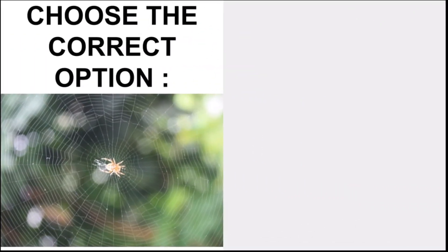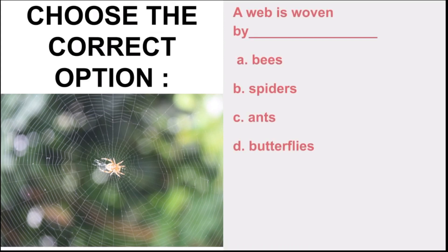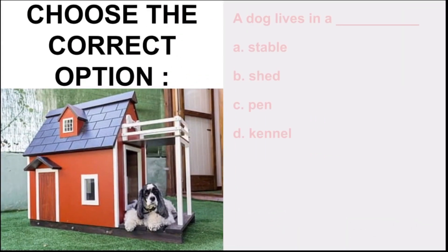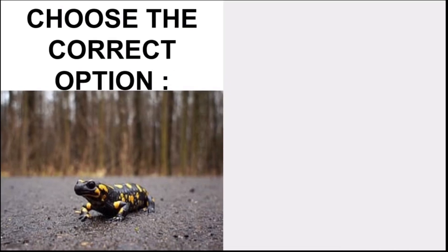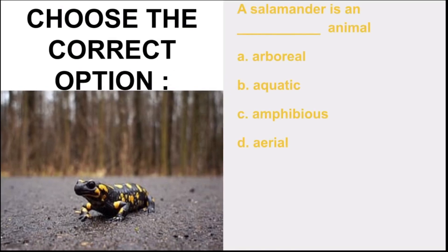Next, choose the correct option. A web is woven by dash. Options are bees, spiders, ants, butterflies. The answer is spiders. A dog lives in a dash. Options are stable, shed, pen, and kennel. The answer is kennel. A salamander is an dash animal. Options are arboreal, aquatic, amphibious, and aerial. The answer is amphibious.